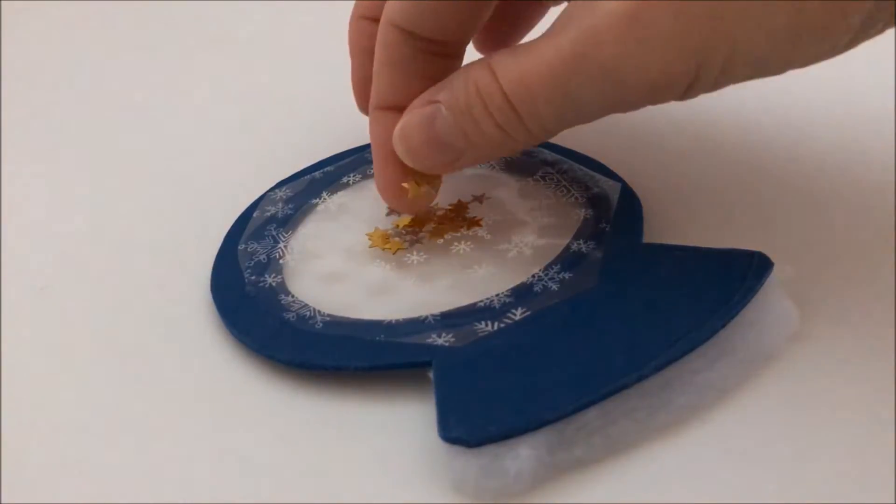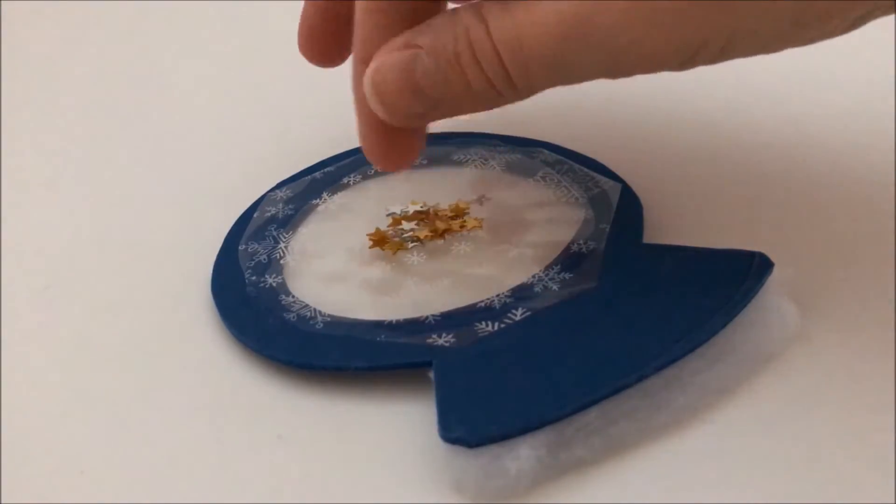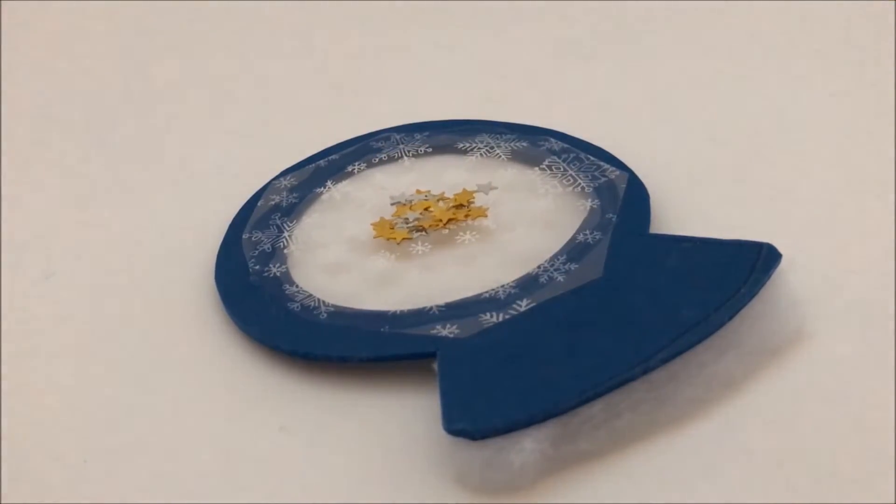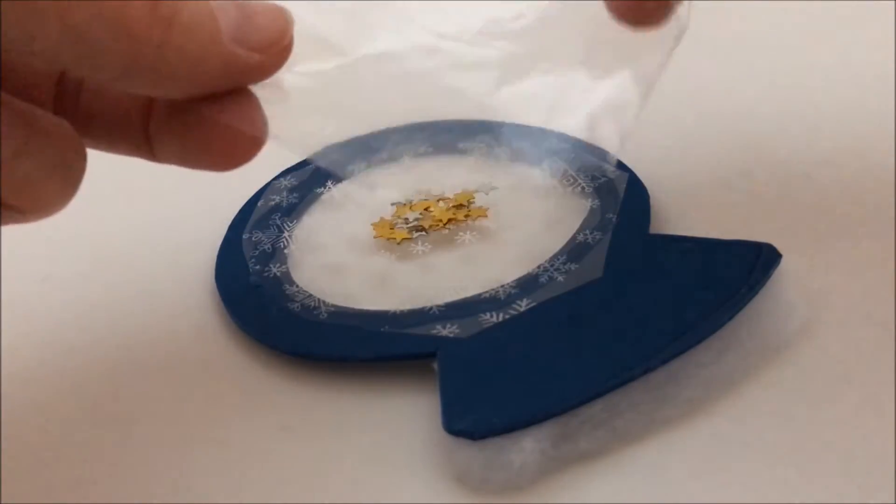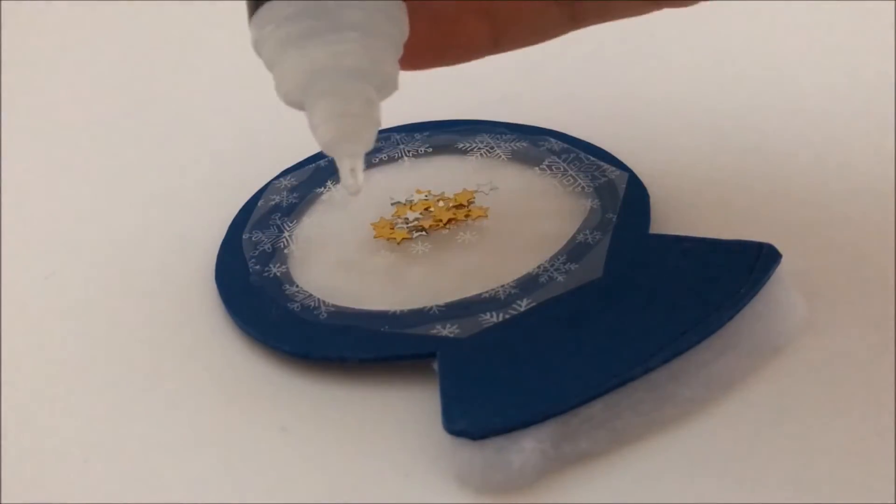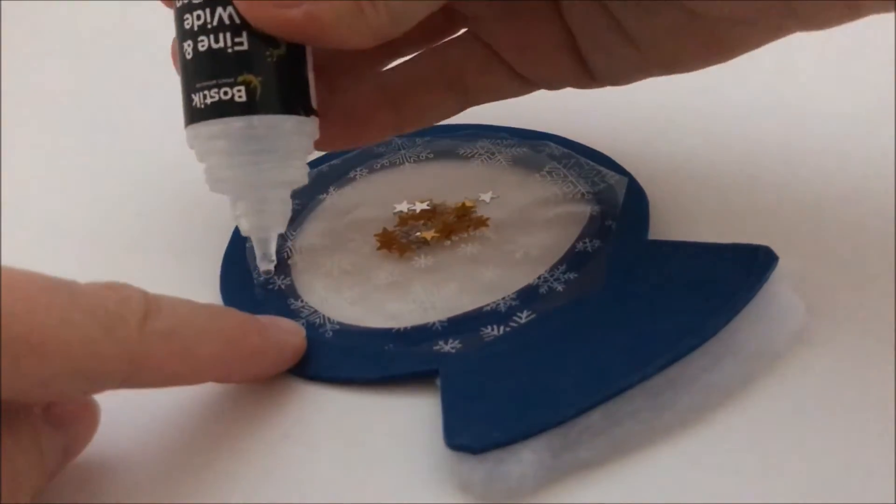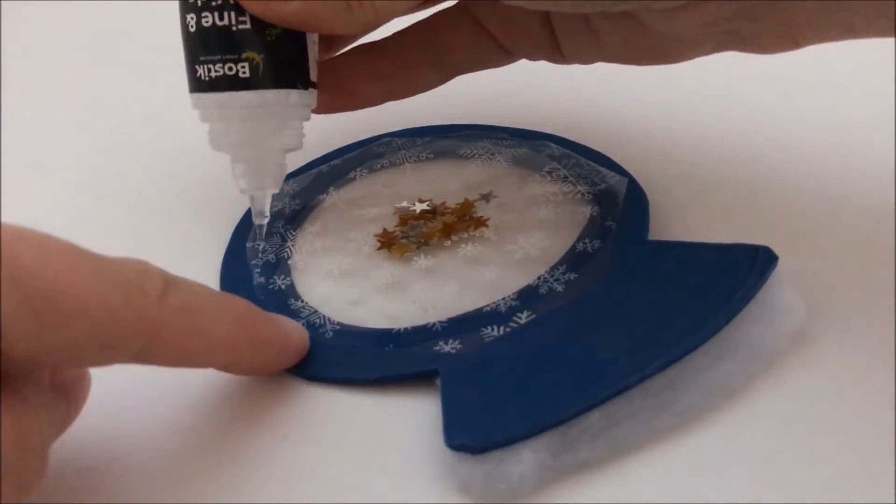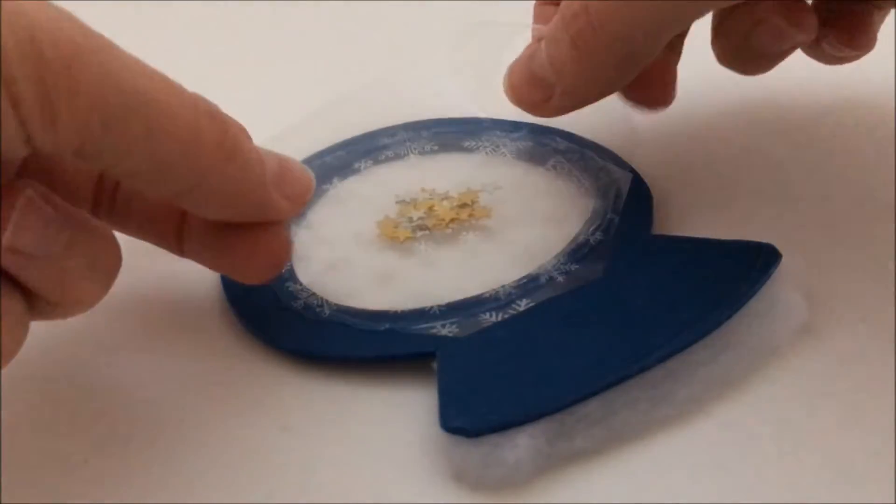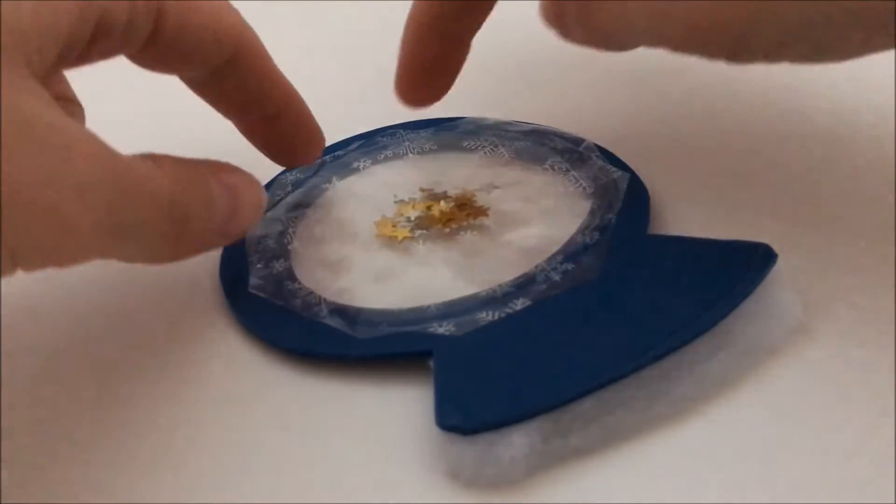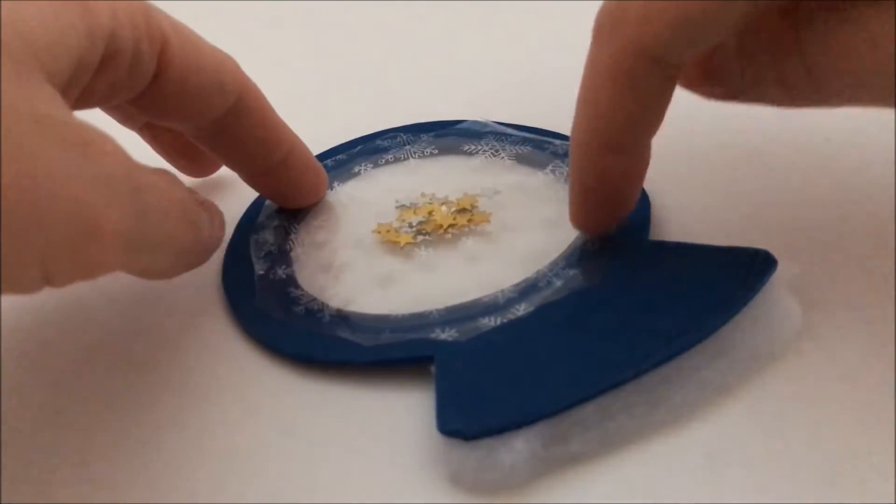Put a little sprinkle of star sequins into the middle of the snow globe. Then take a piece of clear cellophane or plastic. I've used part of a plastic bag for this. Put another ring of glue around the outside and press it down so that all the edges are sealed.